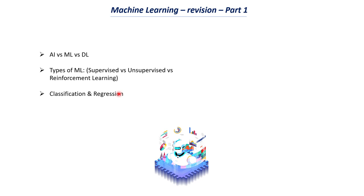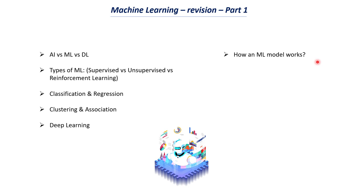Then we will discuss the different types of machine learning, including supervised learning, unsupervised learning, and reinforcement learning. The next topic will be on classification and regression, which are the two subclasses of supervised learning, and then clustering and association, which are the two types of unsupervised learning. Then we will discuss what is meant by deep learning and its applications, how a machine learning model works, model evaluation, and the important metrics we use. The next topic will be overfitting and underfitting, and finally the loss function.